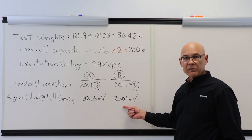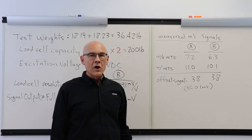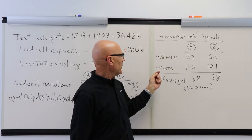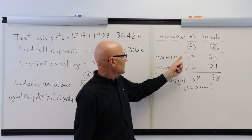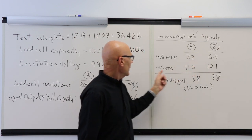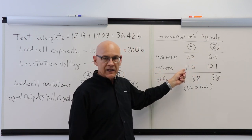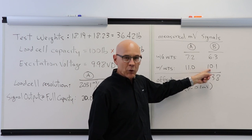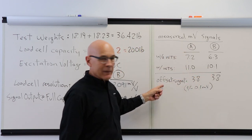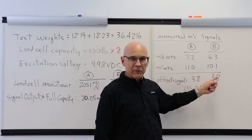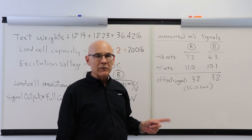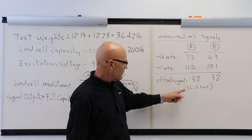Doing the same math for load cell B, 9.98 times 2.091 should be 20.09 millivolts for load cell B. I've recorded the millivolt signals that we measured from the demonstration. Without weights, load cell A was 7.2 millivolts, load cell B was 6.3 millivolts. With the weights, load cell A was 11.0 millivolts and load cell B was 10.1 millivolts. If I take the difference between these two values, that's my offset signal. In both cases it was 3.8 millivolts.